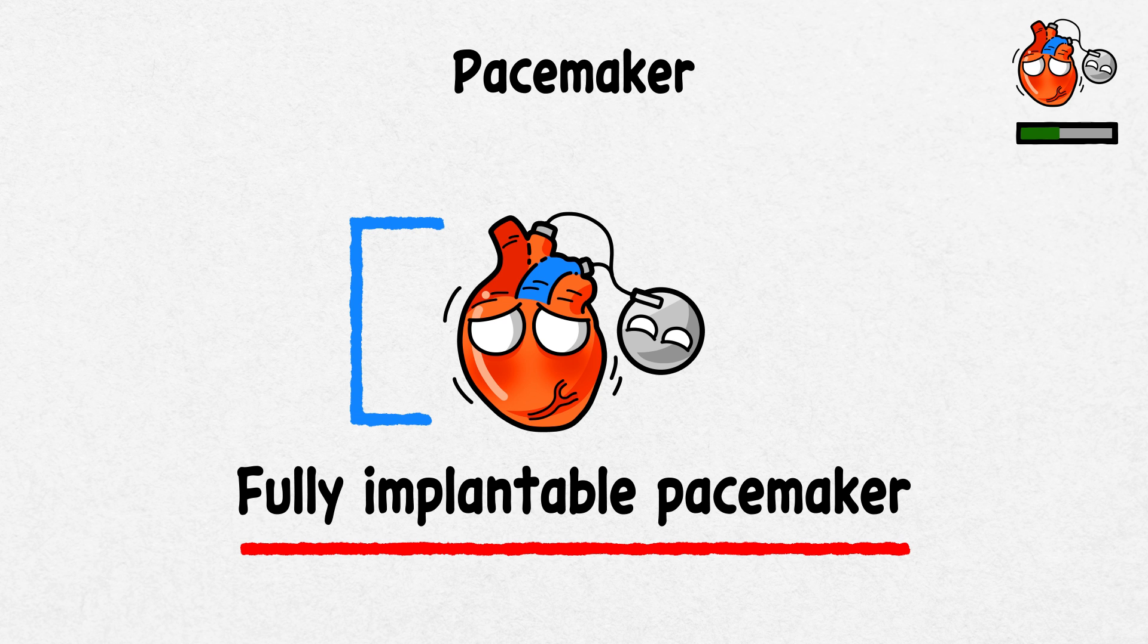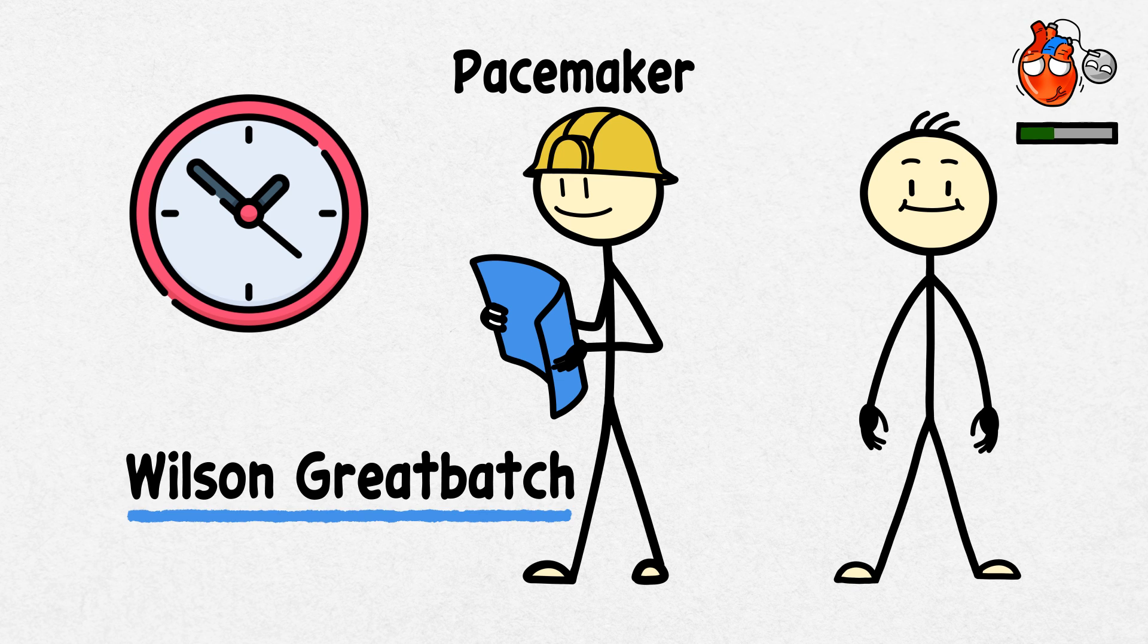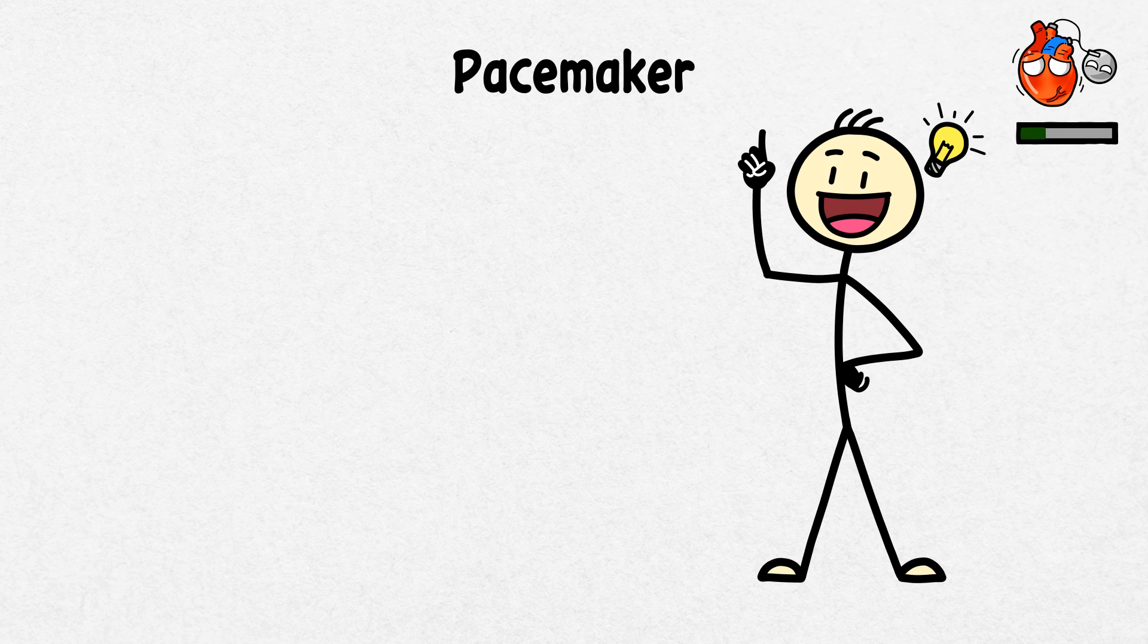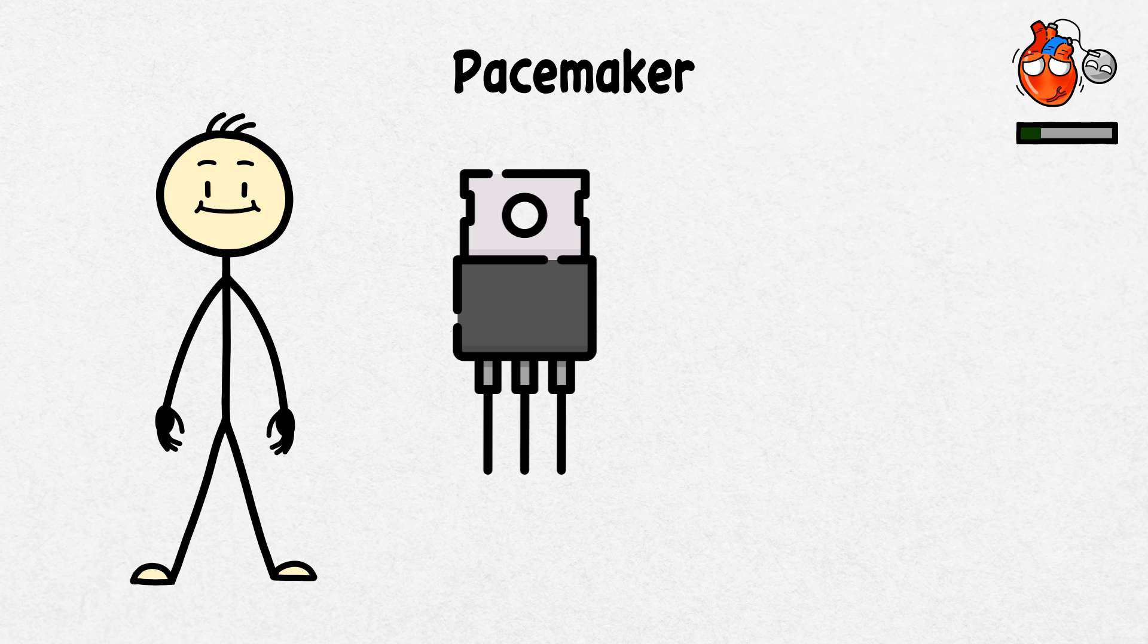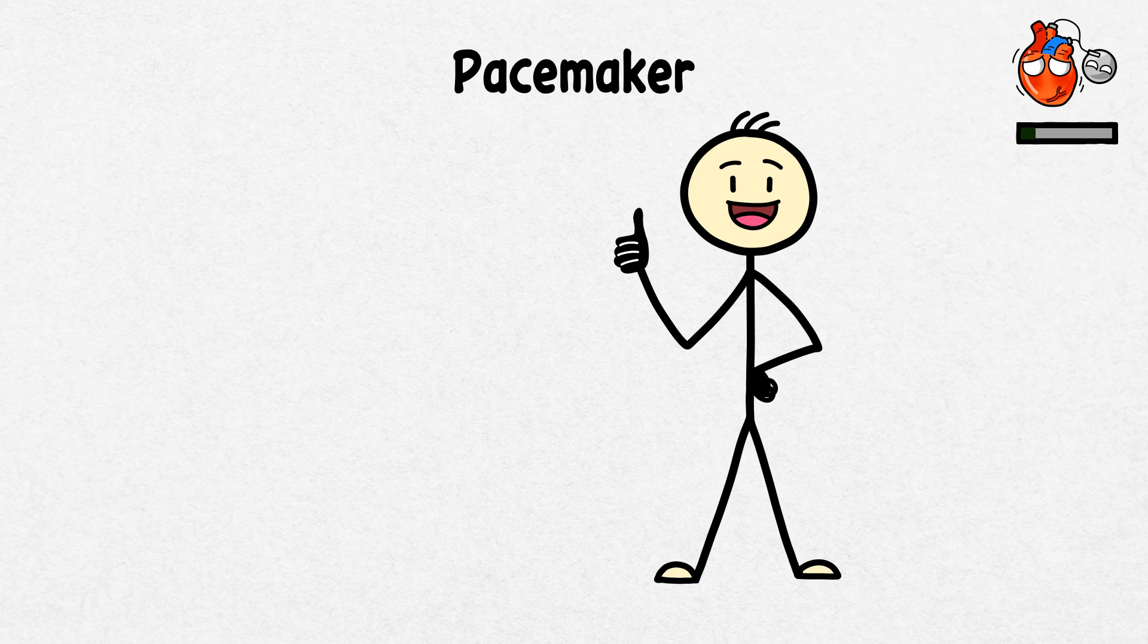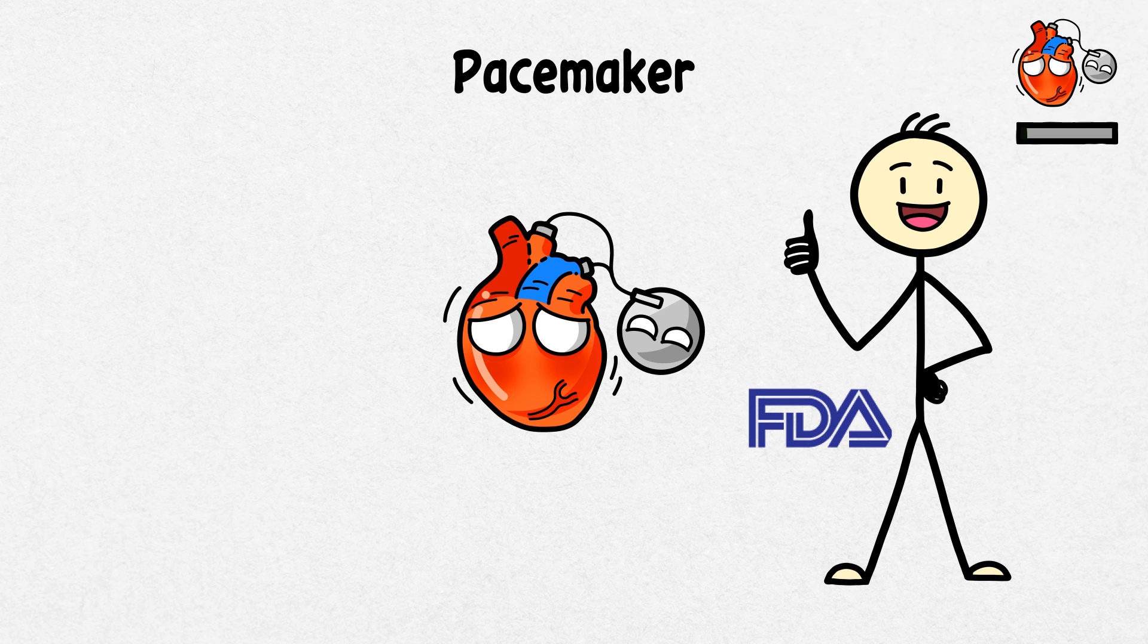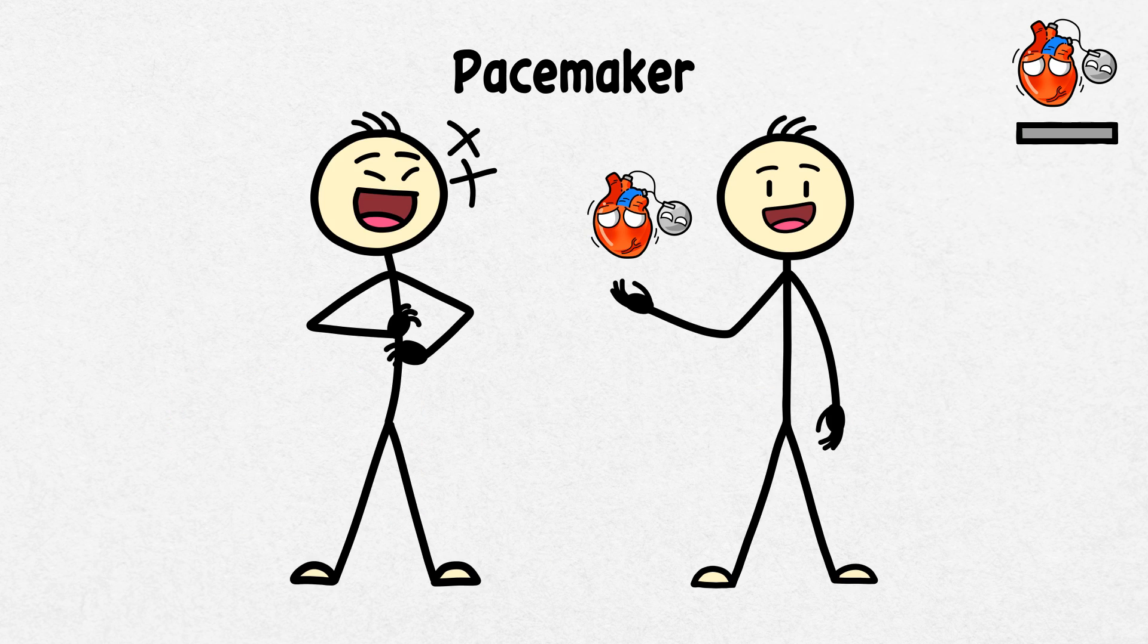Around the same time as Rune Elmqvist, engineer Wilson Greatbatch was tinkering with a device to record heartbeats. When he accidentally used the wrong resistor, his oscillator started pulsing like a heartbeat. That gave him an idea. Why not use it to regulate heartbeats? Greatbatch added a transistor and a battery, creating a small device that would mimic the rhythm of the heart. By 1960, he had tested it on a dog and on himself. He convinced Medtronic to produce it and he received U.S. Food and Drug Administration's approval for the pacemaker in 1962. Today, it's a lifesaver and evidence of Greatbatch's accidental brilliance.